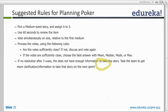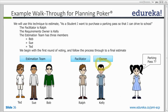Let's take a story: 'As a student, I want to purchase a parking pass so that I can drive to school.' The estimation team consists of Ted, Sue, and Bob. The facilitator is Ralph, who acts as the Scrum master, and the product owner is Kelly.